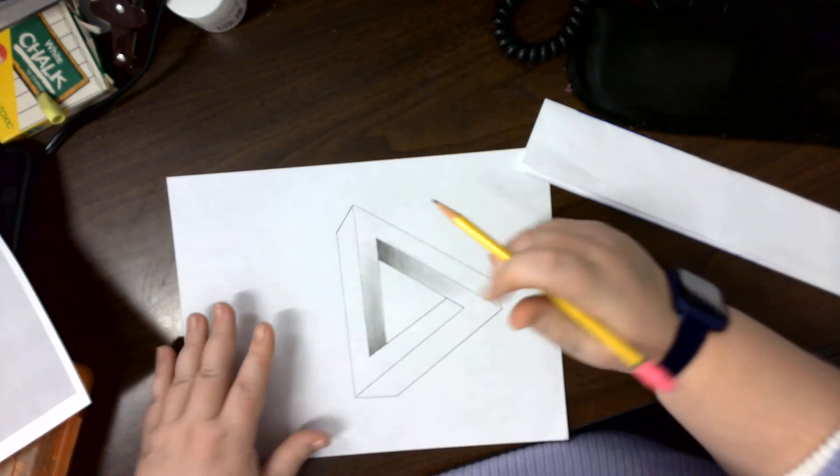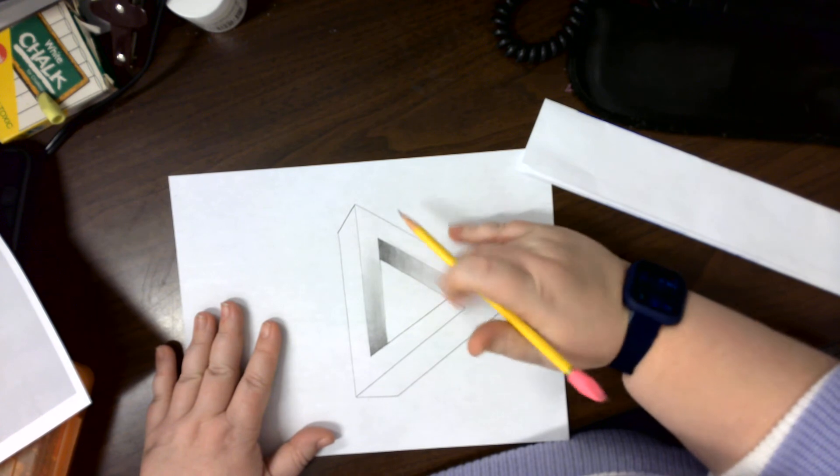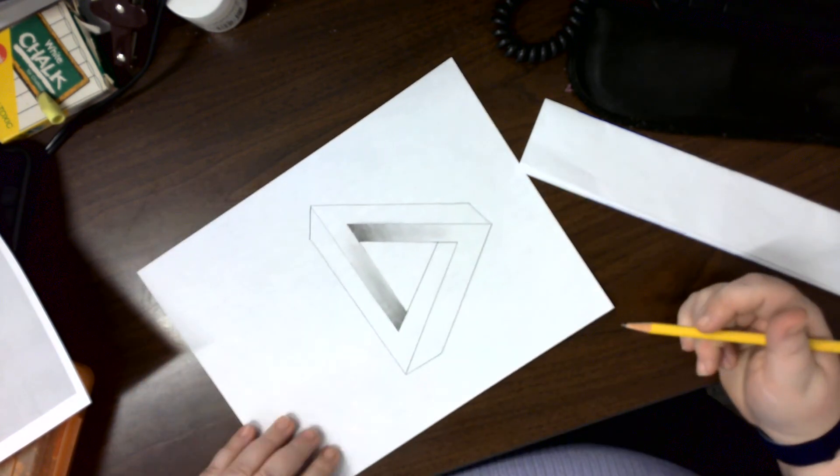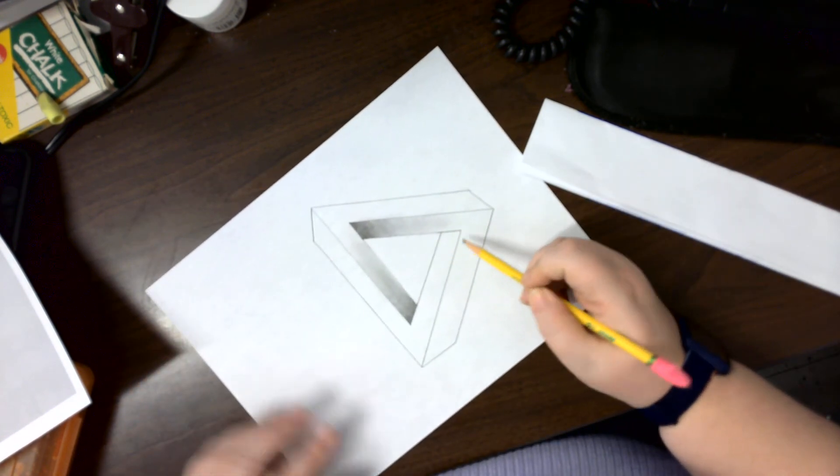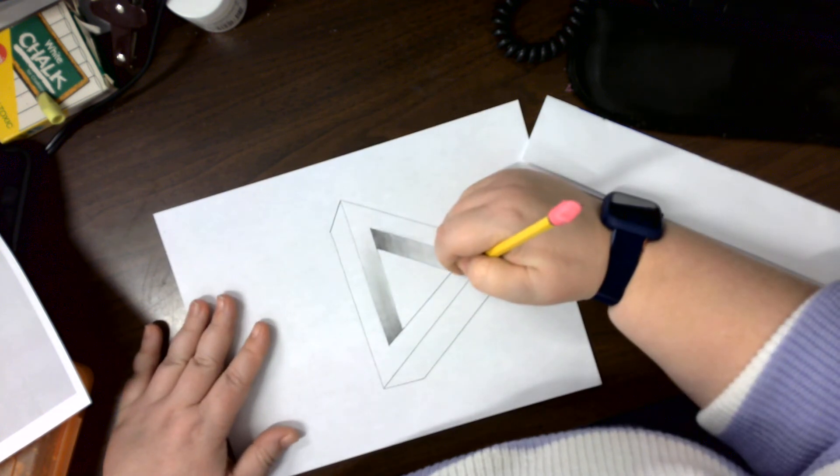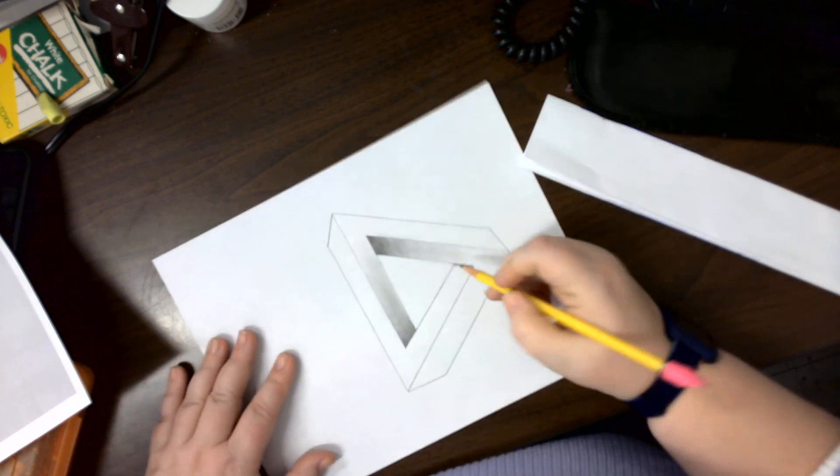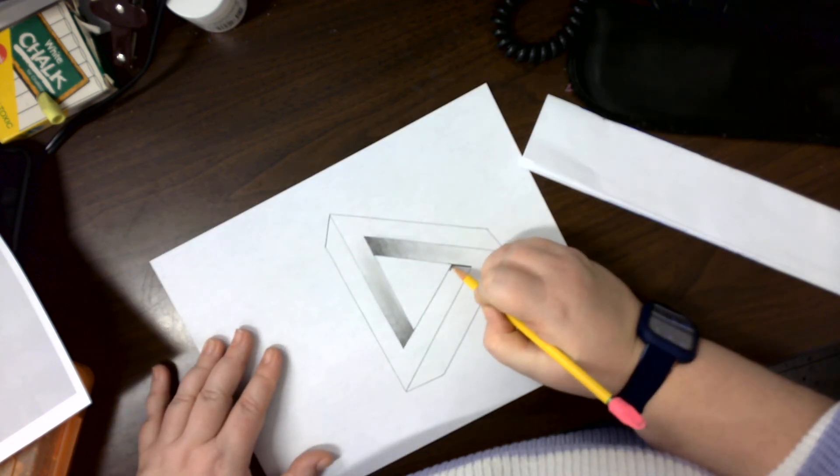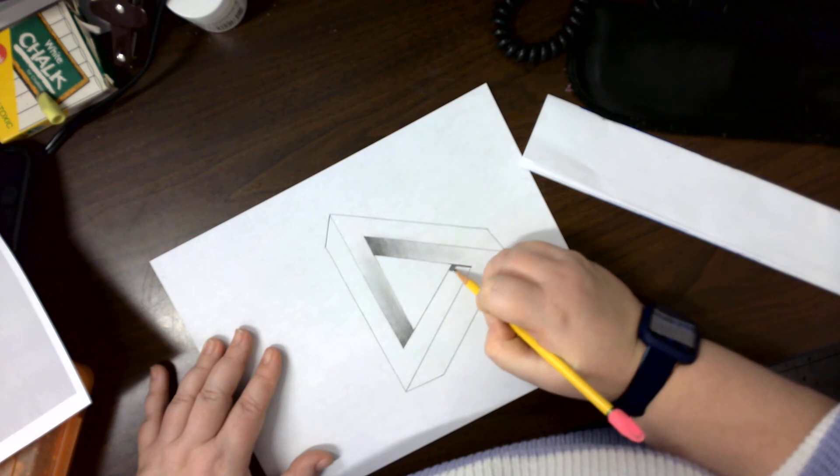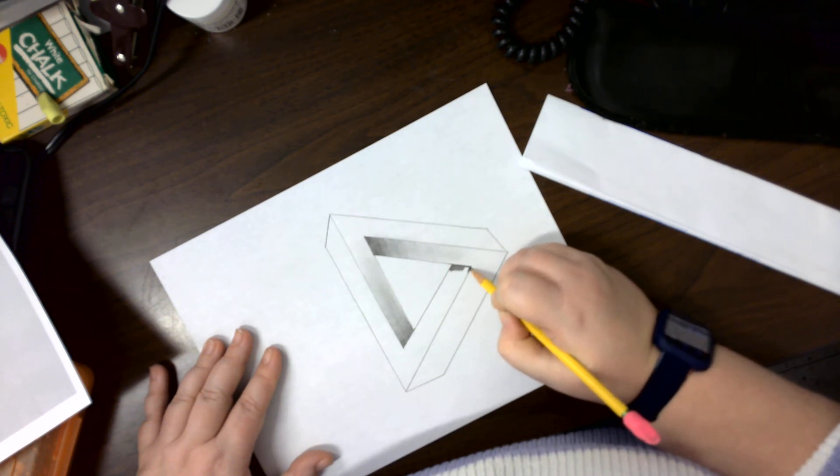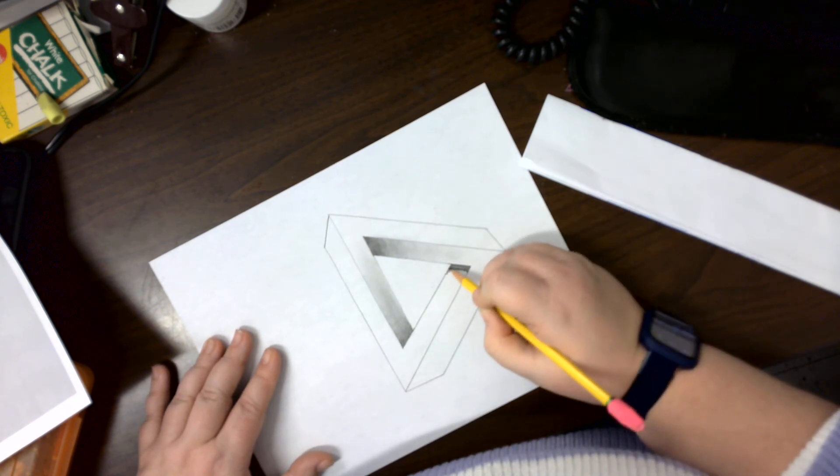I'm going to turn my paper again because that just works easier for me. Smudge this area here. And we're going to start right here, nice and dark. I usually create a thicker line right up against it so that I don't get a lot of those areas where you see like a jagged line come across. I don't want that.